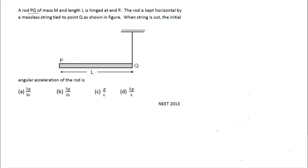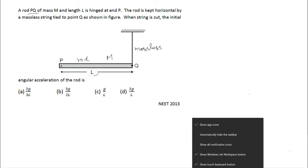So we will explain this problem. A rod PQ — you see this is the rod — mass m, length L as shown. It is hinged at P. The rod is kept horizontal by a massless string tied to point Q, as shown in figure.